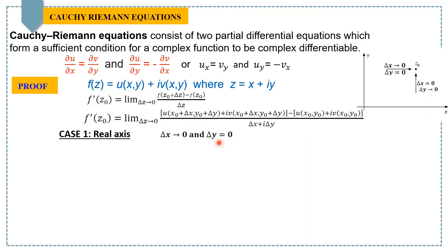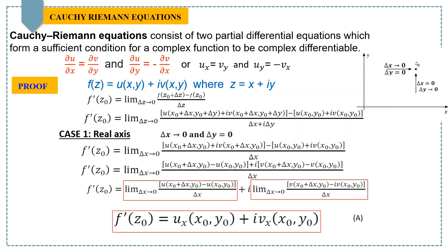Now, taking the limit along the real axis, that is Δx → 0 and keeping Δy = 0, we can write this differential equation in terms of u and v. Keeping the limit Δx → 0 and Δy = 0, we ultimately get this form, which further can be written in two parts.